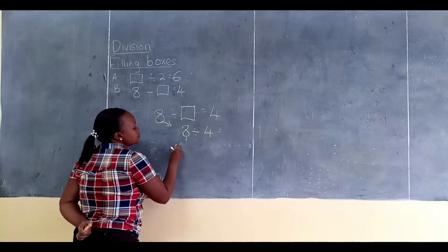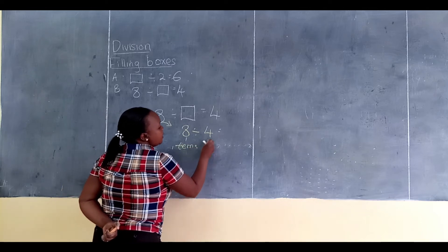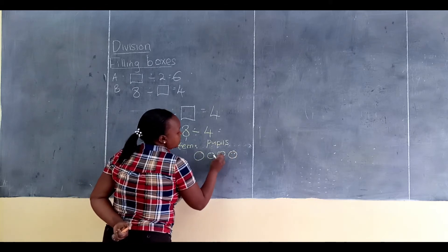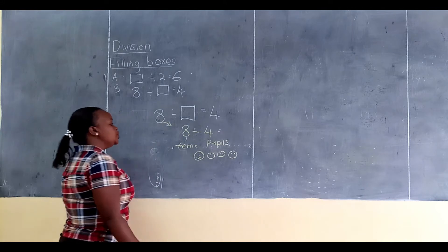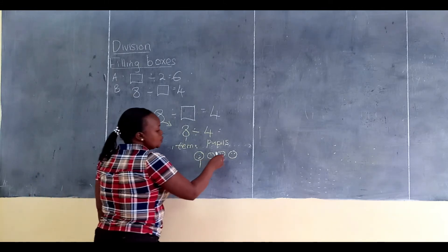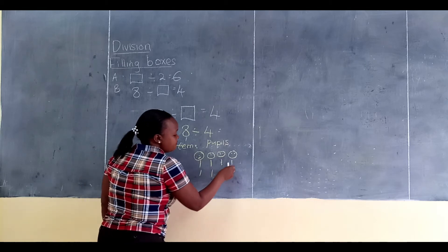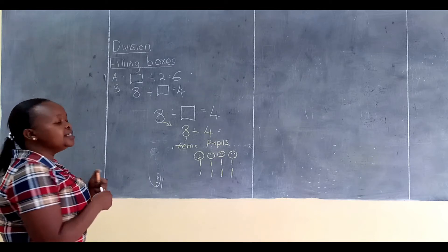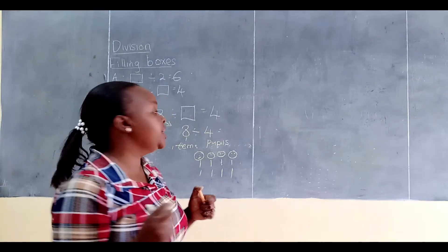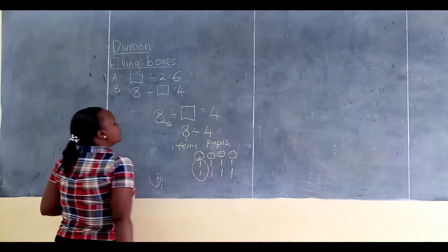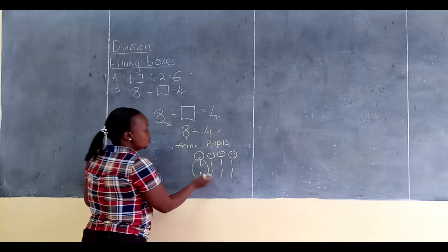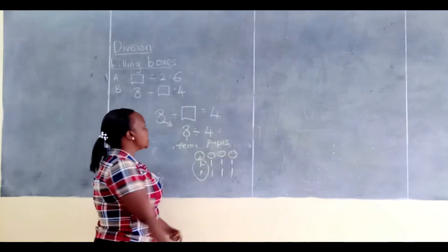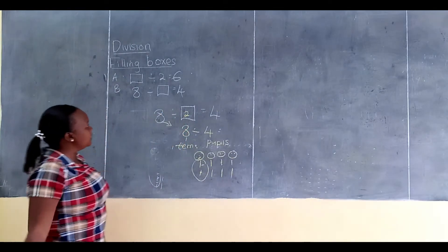So here we have 8 divided by a box is equal to 4. We take 8 divided by 4. I draw my 4 pupils, then I share my 8 items among them. Then I check what each child has gotten: 1, 2. So every child got 2, and that 2 is the missing number in the box. This one is a bit simpler than the first type.